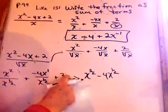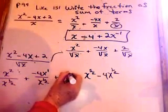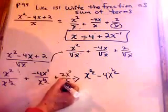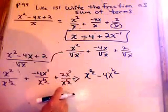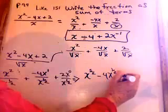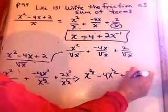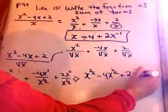And then this one doesn't have an x with it, or you could think of it as x to the 0. And 0 take away 1 half is negative 1 half. So this would be plus 2x to the negative 1 half.